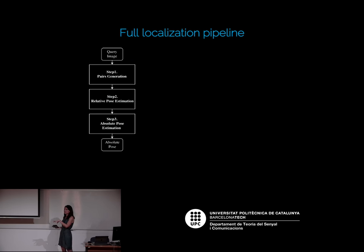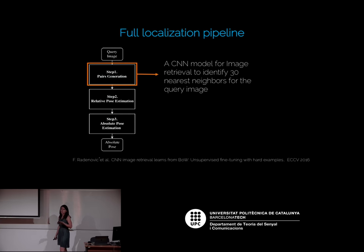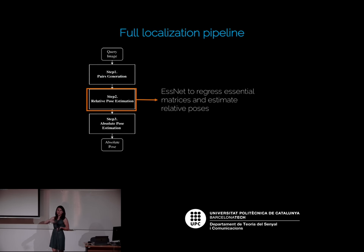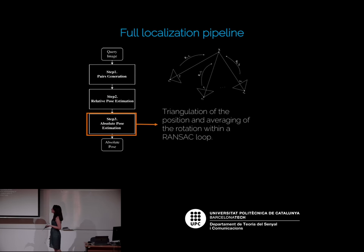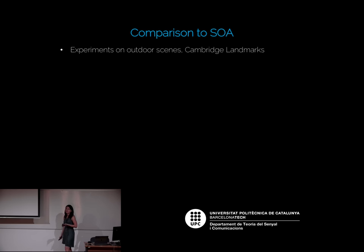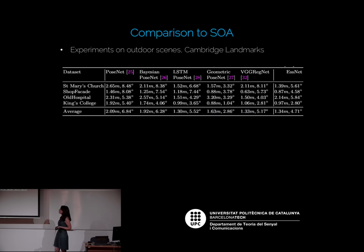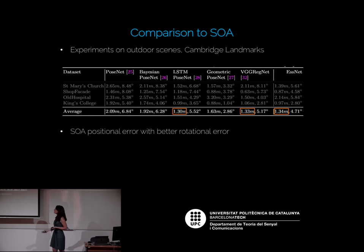To obtain absolute poses, we propose a three-step localization pipeline: first, retrieve similar training images using CNN retrieval methods; second, compute the relative pose with respect to all retrieved images using our network; third, compute the absolute pose by triangulation — combining all relative pose cameras to obtain a coherent absolute position. This is the full essential matrix prediction pipeline.